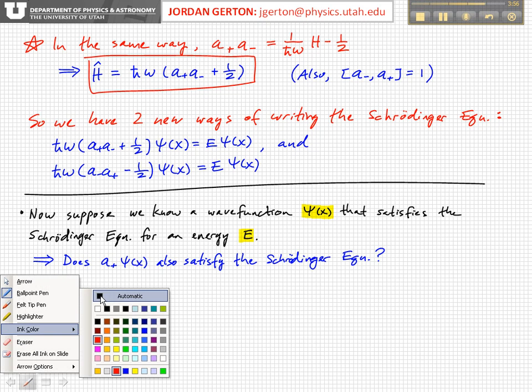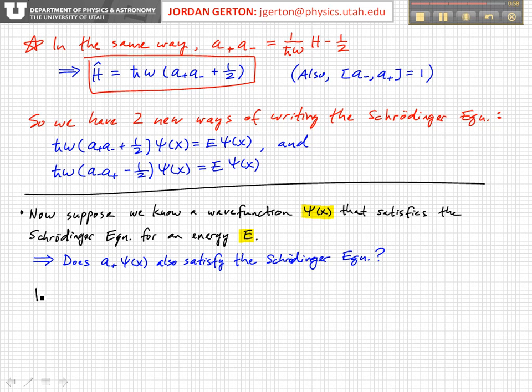So let's just do the math. We have our Hamiltonian operator times a plus psi. And then if we use this form right here of the Hamiltonian operator, this is equal to h bar omega times a plus a minus plus one half. That operator acts on a plus psi. And so we can rearrange the terms here and we get h bar omega times a plus a minus a plus plus one half a plus psi.